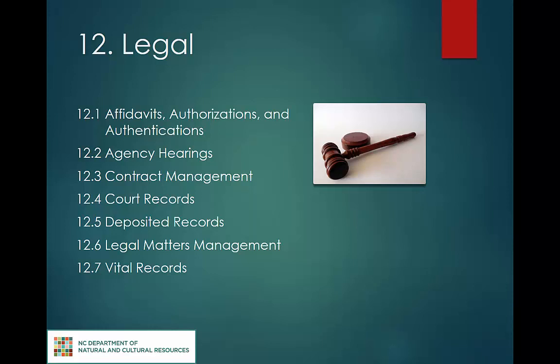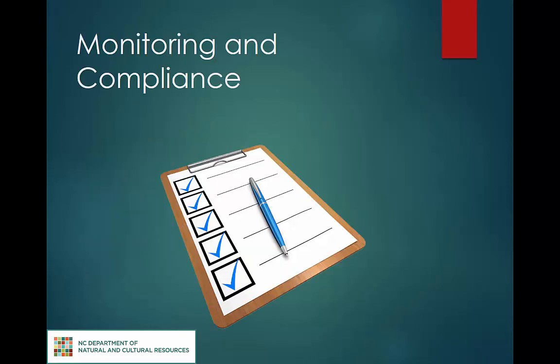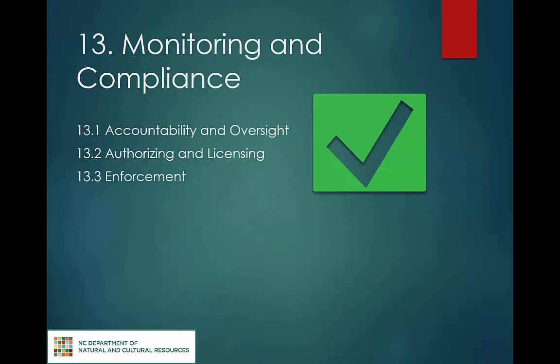The function of monitoring entails systematic periodic reviews to ensure quality products, performance, and the accomplishment of objectives. Compliance ensures that people and organizations meet all obligations and comply with regulations. Accountability and oversight includes audit reports as well as corrective measures. Authorizing and licensing encompasses applications as well as decisions regarding licenses, permits, and authorizations. Enforcement covers inspections and investigations.